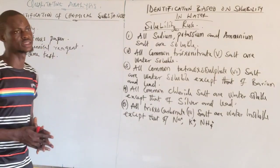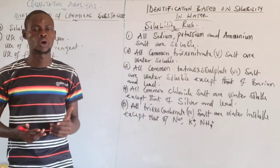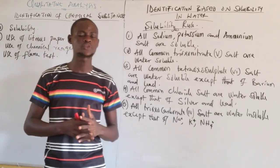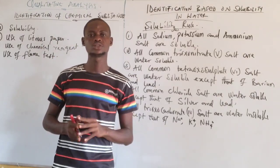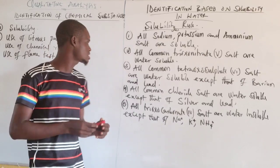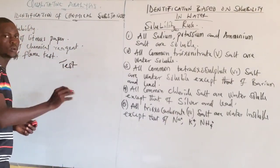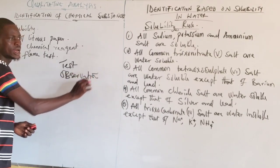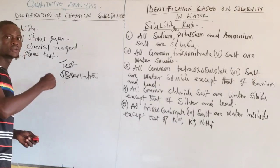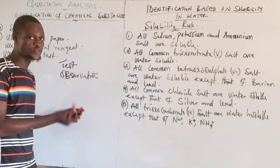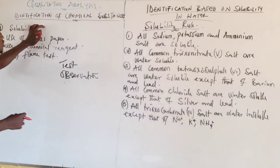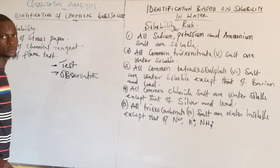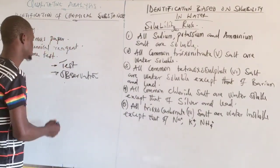Today we are going to be looking at qualitative analysis — the identification of chemical substances. In qualitative analysis, identification is based on two things: the first is the test, and the second is the observation. After getting the observation, we can then find the inference.